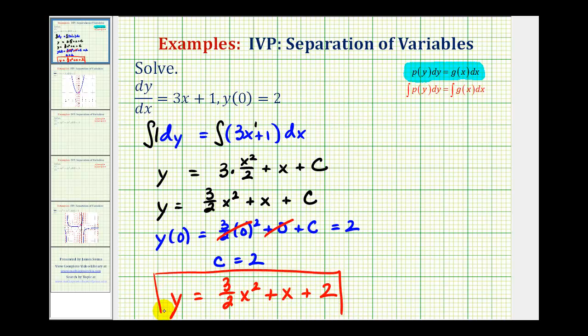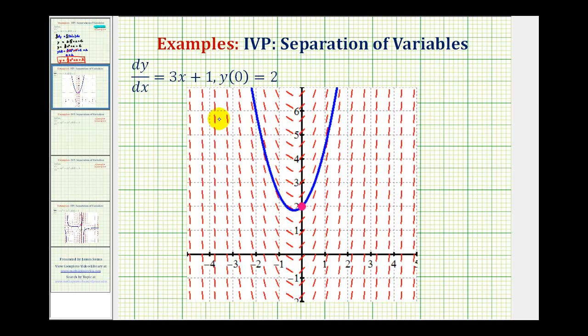Now let's finish by taking a look at the solution to this graphically. If we graph this differential equation, we would have the given red slope field, where each segment here represents the slope of the tangent line to any function that would be a general solution to this given differential equation.